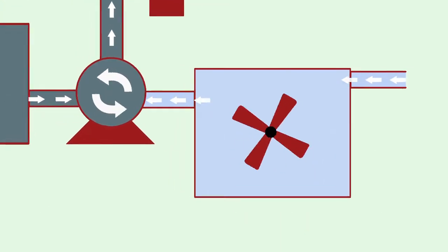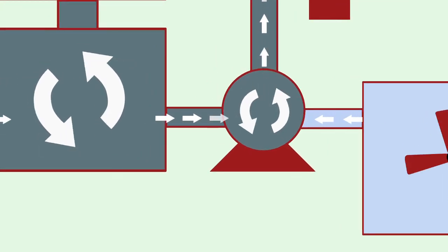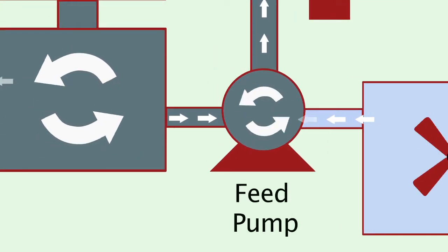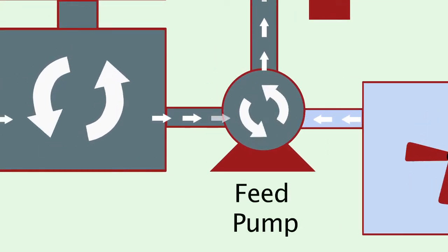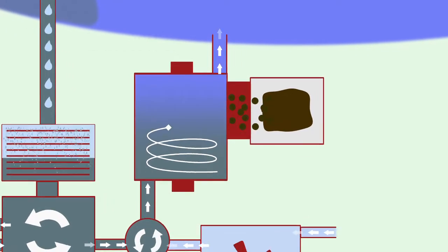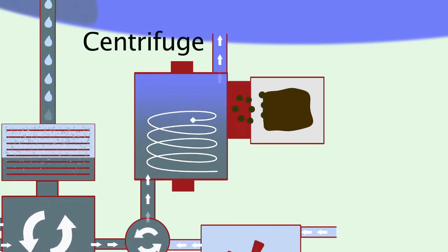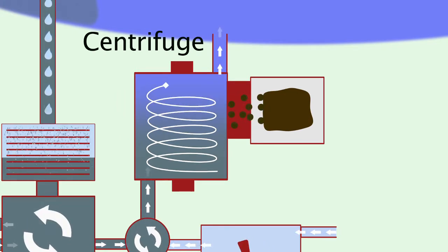This solution, along with the sheared sludge coming out of the shear tank, are fed through a feed pump where they are combined. The combination of polymer and sludge then gets discharged into the centrifuge, which, through G-force, allows reclaimed water and the solids waste to be successfully separated.